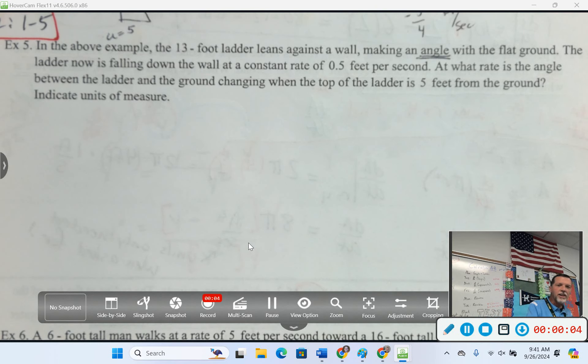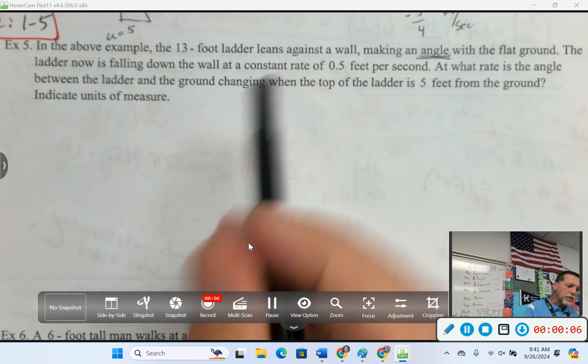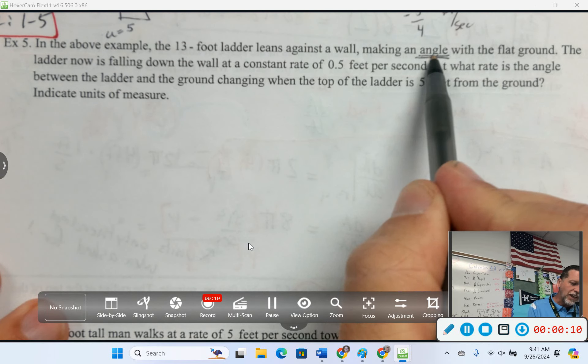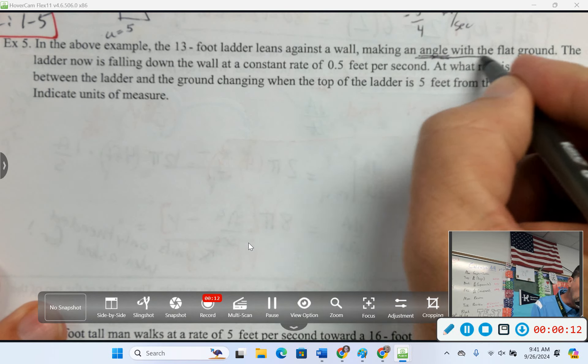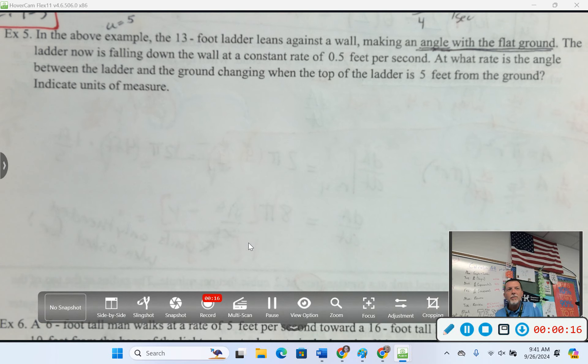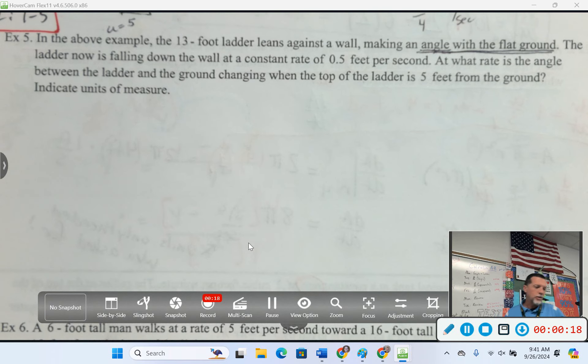Examples 5 and 6 for related rates. Another ladder problem, but this one is going to involve an angle, an angle with the ground. Some people mess up what angle we're talking about, but if you read the problem carefully, it tells you what angle we're dealing with.